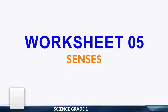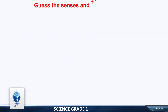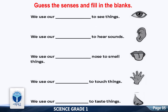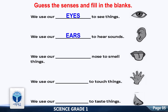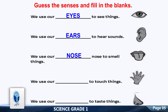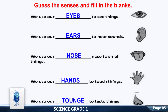Worksheet number 5: Senses. Guess the senses and fill in the blanks. Yes, very good. We use our eyes to see things. We use our ears to hear sound. We use our nose to smell things. We use our hands to touch things. We use our tongue to taste things.